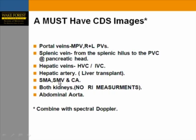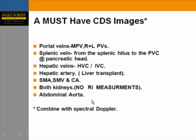Evaluate both kidneys with color and power Doppler, but avoid attempting to measure resistive indices routinely — if elevated, it creates a clinical dilemma about next steps. Unless there is concern for renal vascular hypertension, resistive indices are not attempted. Also evaluate the abdominal aorta to avoid missing silent aneurysms, specifically in elderly patients.